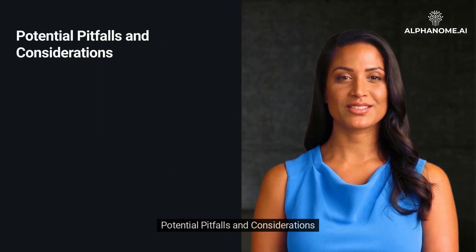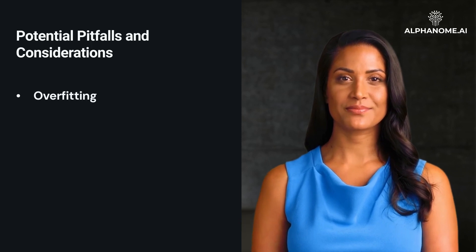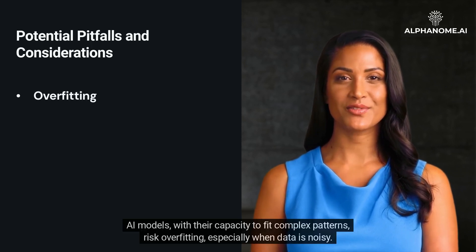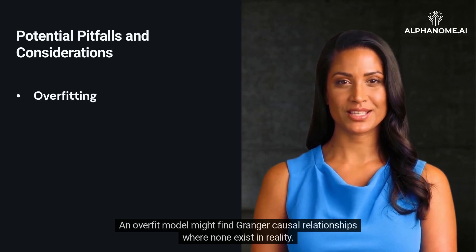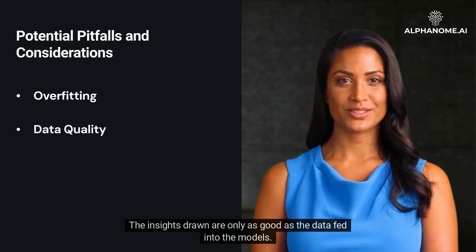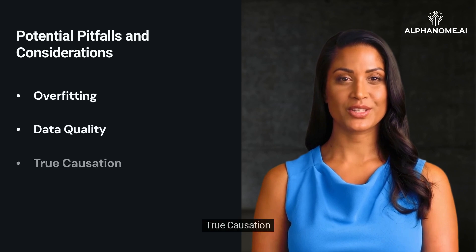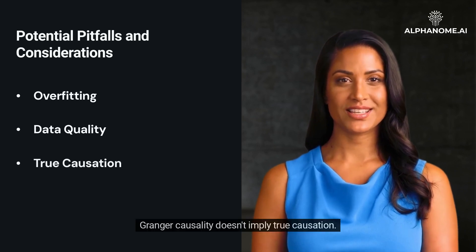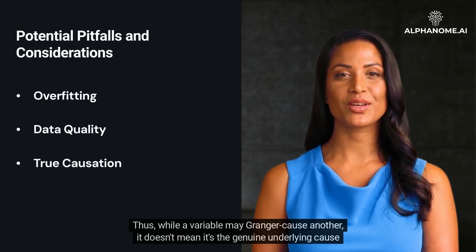Potential Pitfalls and Considerations: While the combination of Granger Causality and AI holds promise, it's crucial to approach it with a critical mindset. Overfitting: AI models, with their capacity to fit complex patterns, risk overfitting, especially when data is noisy — an overfit model might find Granger-causal relationships where none exist in reality. Data Quality: The insights drawn are only as good as the data fed into the models; erroneous or biased data can lead to misleading conclusions. True Causation: Granger Causality doesn't imply true causation — while a variable may Granger-cause another, it doesn't mean it's the genuine underlying cause of changes.